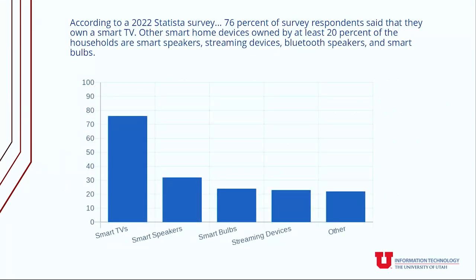One statistic before I talk about how we did this: this is a 2022 statistic — I'm sure the numbers are higher now — but 76% of homes have smart TVs in them, and about 20% of homes have other streaming devices, smart bulbs, smart speakers, things like that. This is clearly a use case that users are familiar with and they expect when they're in housing.